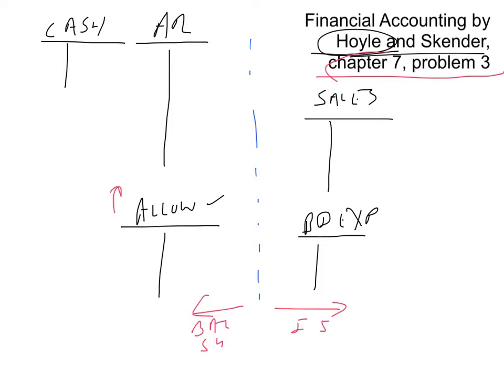In problem number three we have a couple of basic transactions. It says they make sales on account of $800,000 — that's a debit to accounts receivable and a credit to sales. They also collect cash of $430,000, so we debit cash for $430,000 and credit accounts receivable for $430,000. Again, very basic transactions.